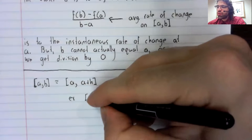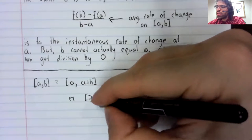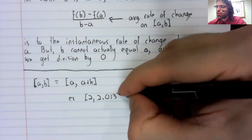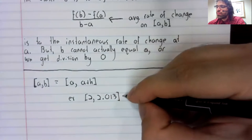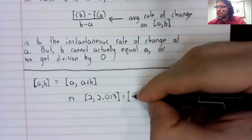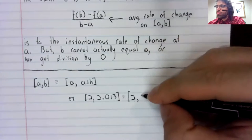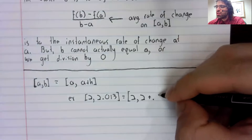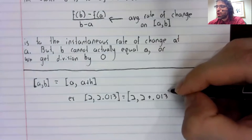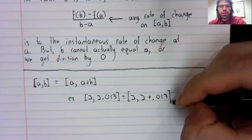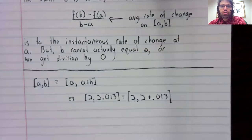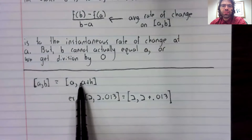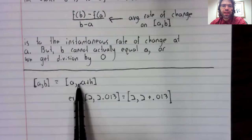For example, the interval from two to two point zero one three is the interval from two to two plus point zero one three. We can always rewrite an interval like this if we care to.